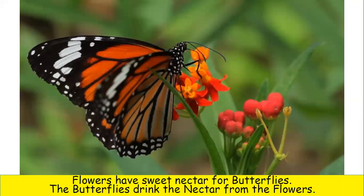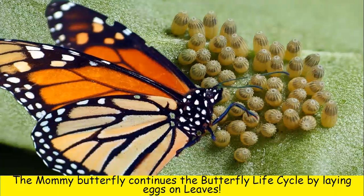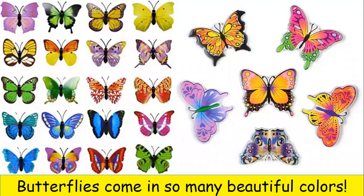Butterflies fly to find flowers. Flowers have sweet nectar for butterflies. The butterflies drink the nectar from the flowers. The mommy butterfly continues the butterfly life cycle by laying eggs on leaves.